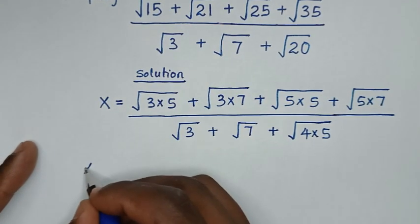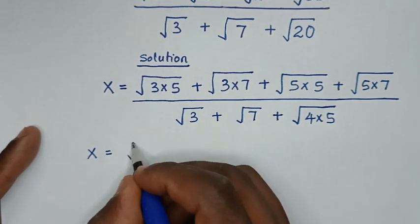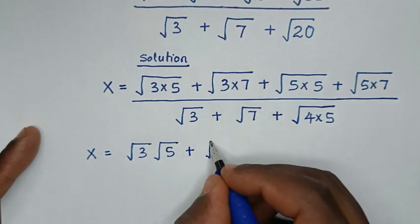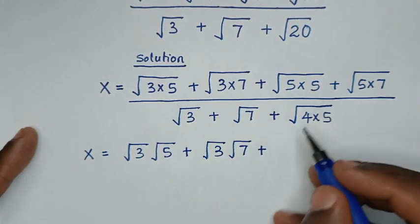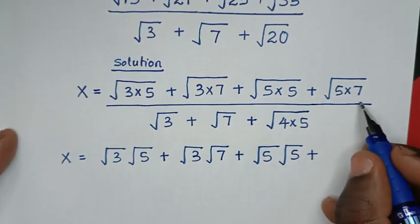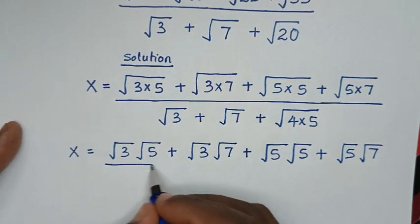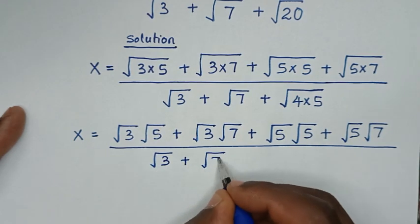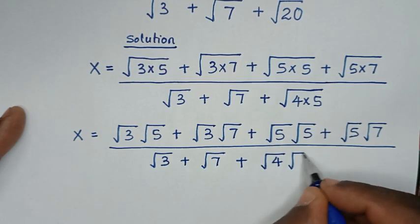Then in the next step, x equals — we separate each term: √3·√5 + √3·√7 + √5·√5 + √5·√7, over √3 + √7 + √4·√5.